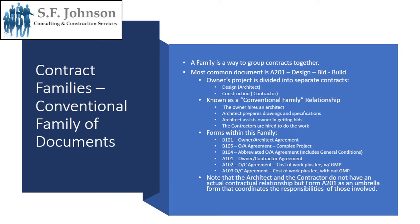The forms within this family are as follows. B101 is the owner-architect agreement. B105 is the owner-architect agreement for a very complex project. B104 is the abbreviated owner-architect agreement, which also includes general conditions. A101 is the owner-contractor agreement. A102 is the owner-contractor agreement with the cost of work, specifically cost of work plus the GMP. And A103 is the owner-contractor agreement with the cost of work and no GMP. It should be noted that there is no direct contractual agreement between the architect and the contractor. To address that, form A201 is an umbrella form that coordinates the responsibilities among all parties, including the architect and the contractors.